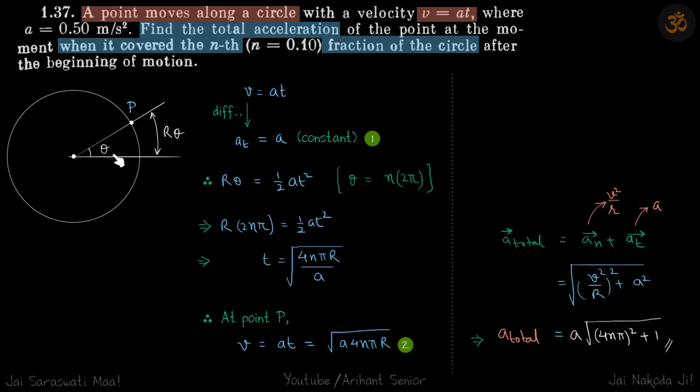The normal acceleration we'll get by v² / r, and tangential acceleration we'll get by differentiating this. Differentiating this, we get a_t is equal to a, which is a constant. So if acceleration is constant, we can write equation of motion.